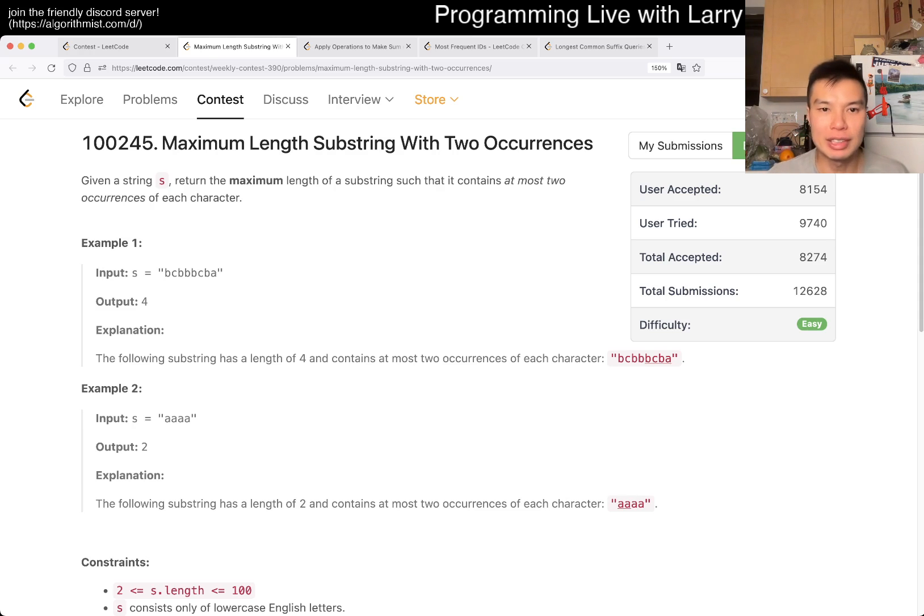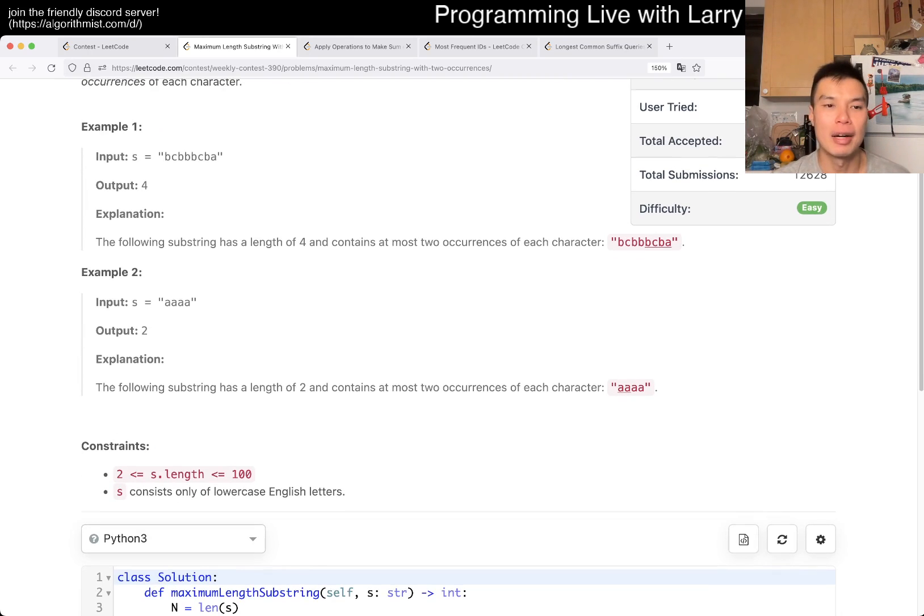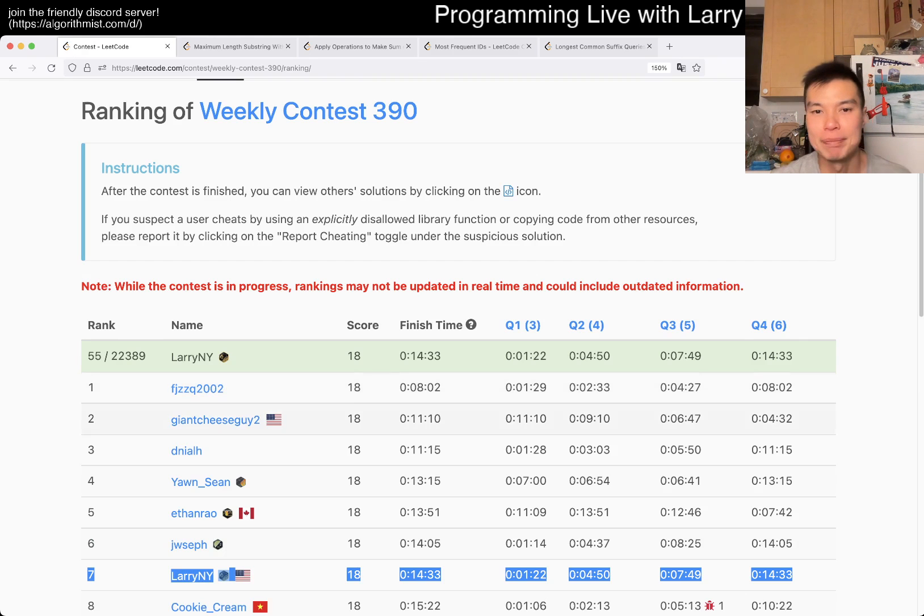To be honest, when I first saw this problem, I was double checking that there wasn't a part 2, because this is a very obvious sliding window problem. But also, to be honest, because this was Q1, I looked at, I double checked the constraint first. And since the constraint is 100, I did a very lazy thing, so that I can kind of get it fast, right? And I did it in a minute and 22 seconds.